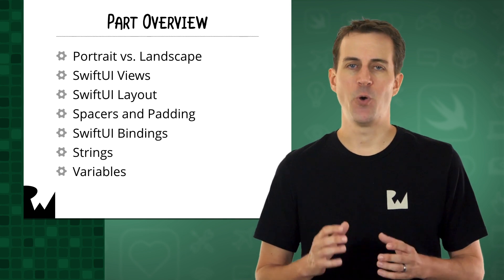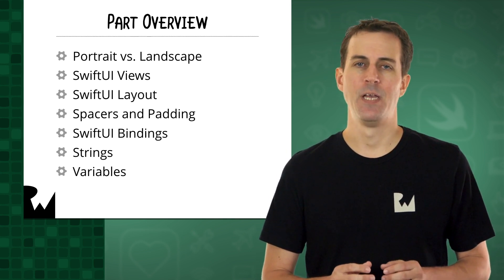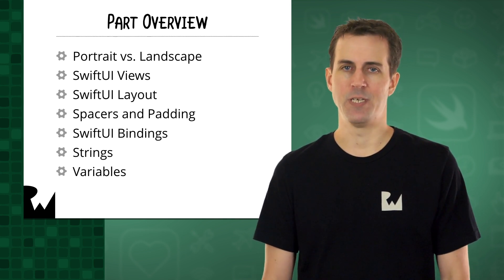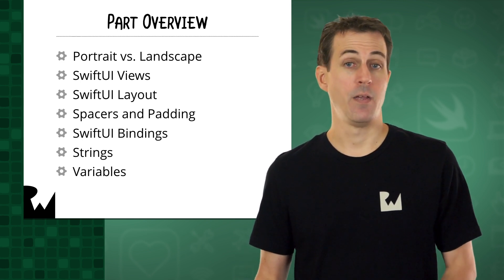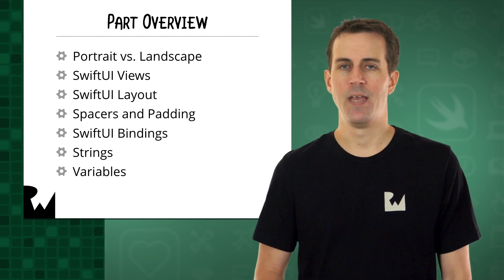We'll begin this part of the course by showing you how you can configure your app for portrait or landscape orientation. You'll then learn more about what a view is in SwiftUI, the different types of views we'll be using to build Bullseye, and the plan for how we want to lay out the views.